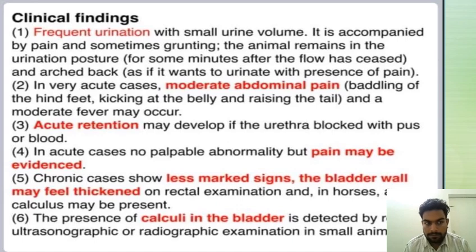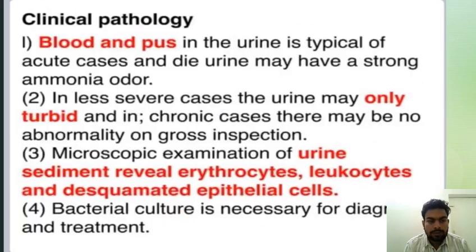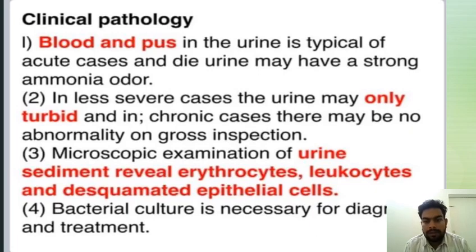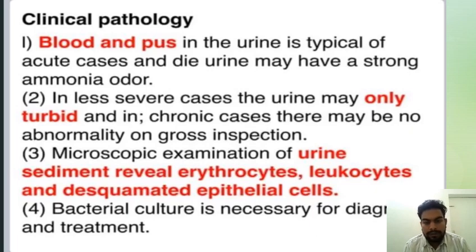Clinical pathology: blood and pus in the urine is typical of acute cases, and the urine may have a strong ammonia odor. In chronic cases there may be no abnormality on gross inspection.